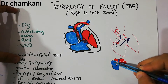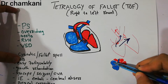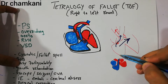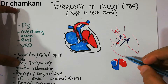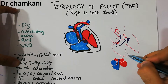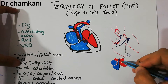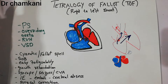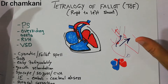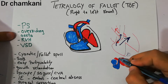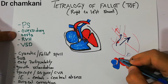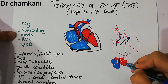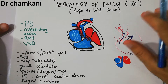Normally, deoxygenated blood comes into the right atrium, from the right atrium into the right ventricle, and from the right ventricle into the pulmonary artery, where it gets oxygenated in the lungs. From the lungs it goes into the left ventricle, and from the left ventricle directly into the body through the aorta. Normally there is no connection between the pulmonary artery and the aorta, or between the right ventricle and the left ventricle — no direct connection and no mixing.